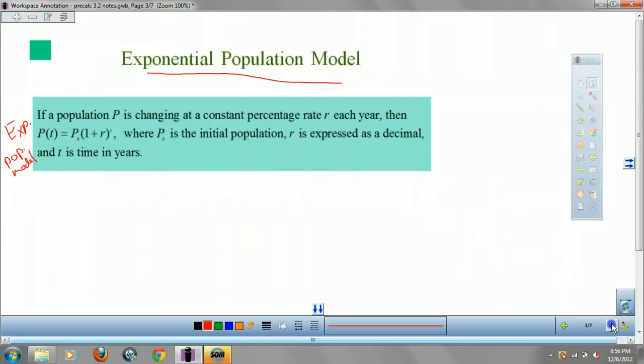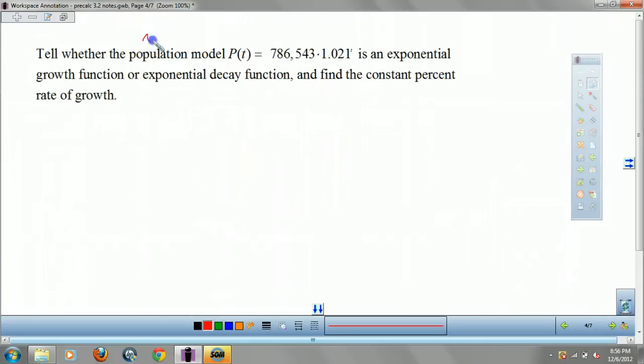Okay. See, it's used. This is noteworthy. You have population growing at 786,543. Well, that's your initial, right? Times your rate to the t. Now, we've got to determine is it growth or decay? And then find the constant percent rate of growth or decay.